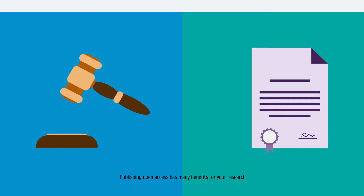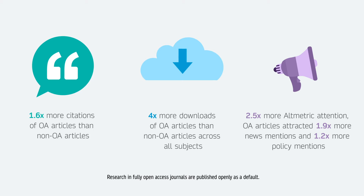Publishing open access has many benefits for your research. Research in fully open access journals is published openly as a default. You can opt out of open access in hybrid journals if you so choose.